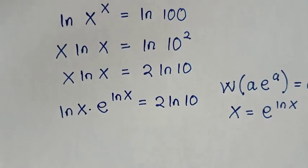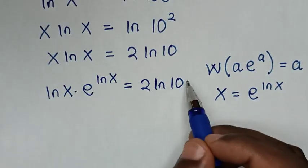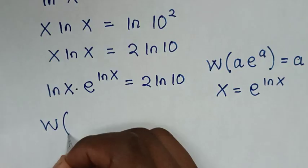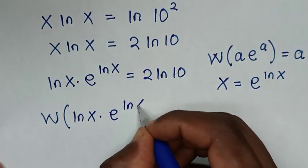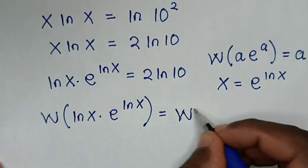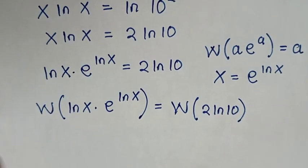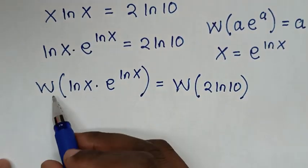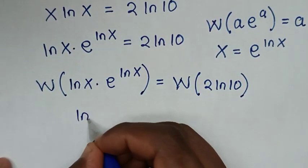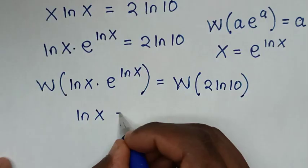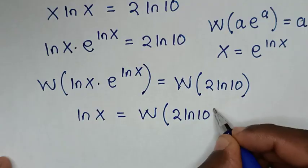Then in the next step, from here, this form — we can apply the W function on both sides. So we'll apply W of (ln of x times e to the power of ln of x) is equal to W of (2 ln of 10). Then W of (ln of x times e to the power of ln of x) is the same as ln of x, so ln of x is equal to W of (2 times ln of 10).